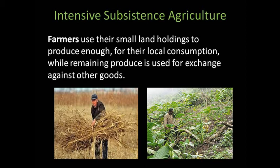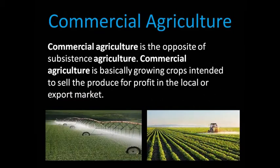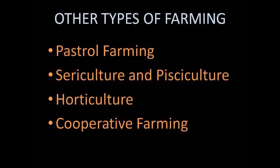Intensive subsistence agriculture: farmers use their small land holdings to produce enough for their local consumption, while the remaining produce is used for exchange against other goods. Commercial agriculture is the opposite of subsistence agriculture — it is basically growing crops intended to sell the produce for profit in the local or export markets. Other types of farming include pastoral farming, sericulture and pisciculture, horticulture and cooperative farming.